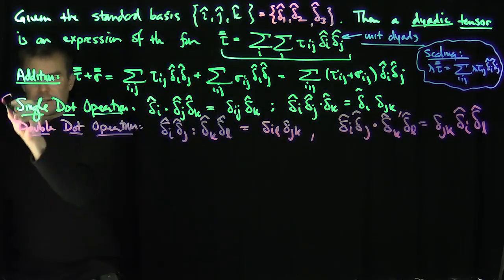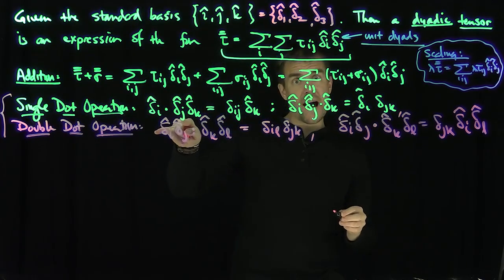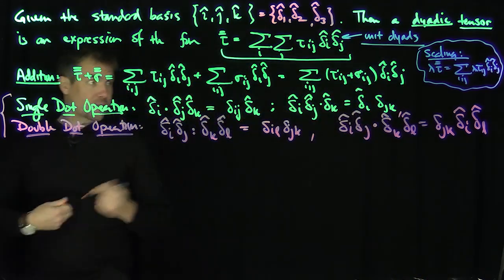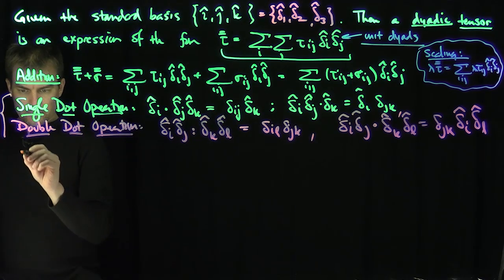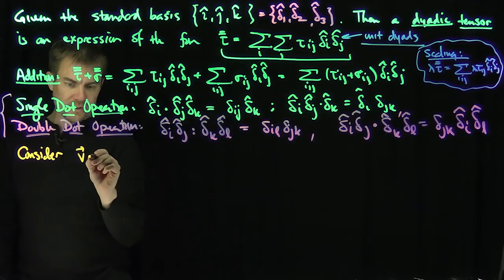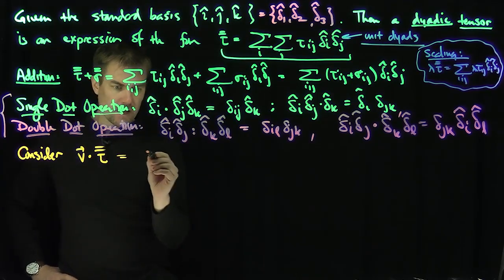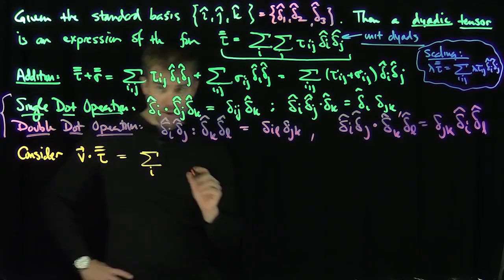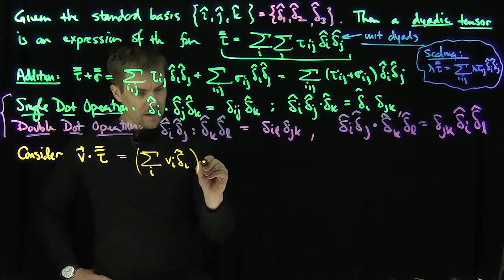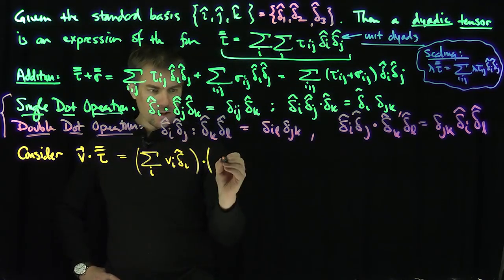These are how I define the dot operations on the standard basis — either in terms of vectors or dyadic tensors. Now let's consider a vector v and do a single dot v dot tau-bar-bar. This is going to be the sum over i of v_i delta-i-hat, being a little breezy with covariant and contravariant for now, single-dotted with the sum over j, sum over k, of tau_jk delta-j-hat delta-k-hat.